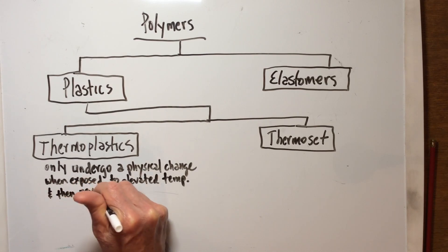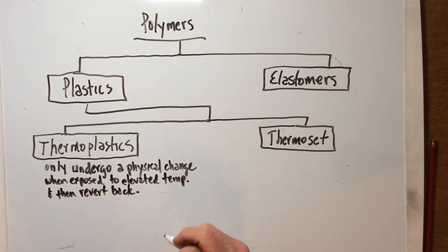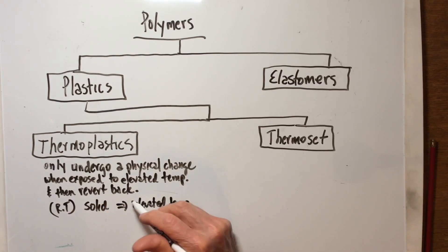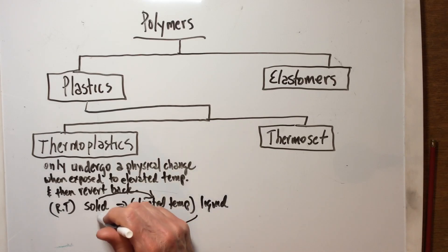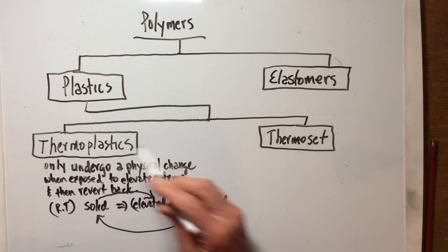And then revert back. In other words, they're going to go from at room temperature as a solid, will then go to at an elevated temperature to a liquid. So you would go this direction, and then when you remove the heat this goes back to a solid, so it goes back and forth, back and forth. So it really just undergoes a physical change when subjected to elevated temperatures. Elevated temperatures for most thermoplastics begin to liquefy or melt.